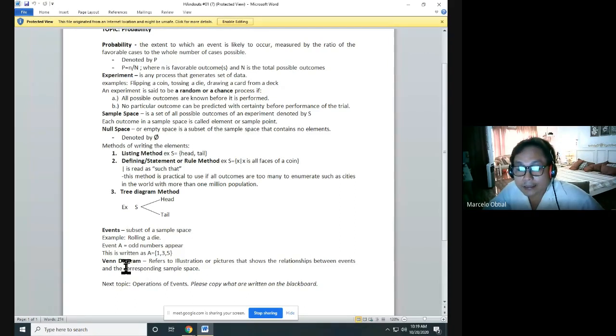And last definition of term is Venn diagram, refers to the illustration or pictures that shows the relationships between events in the corresponding sample space. This will be our next topic next week.